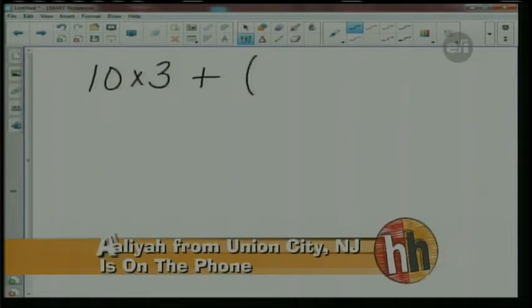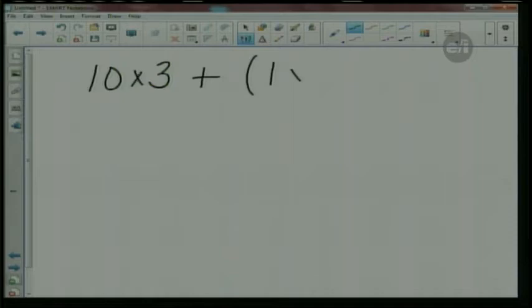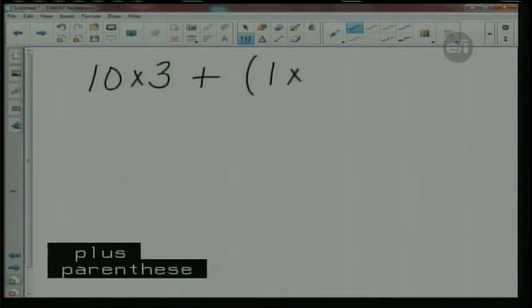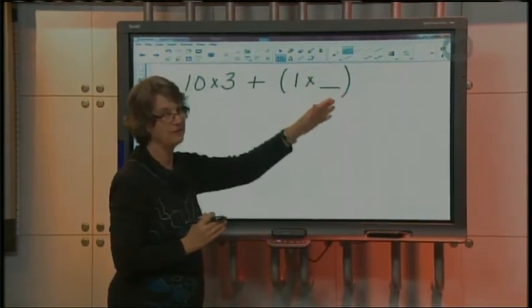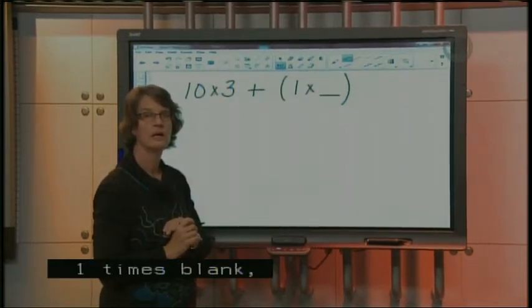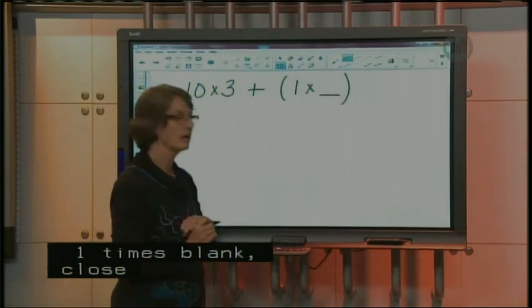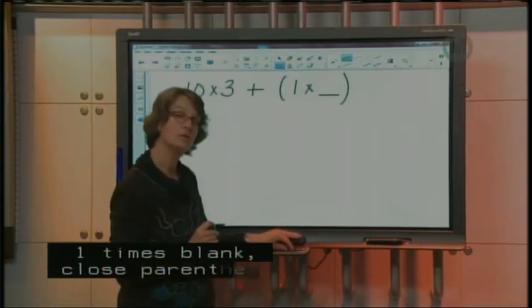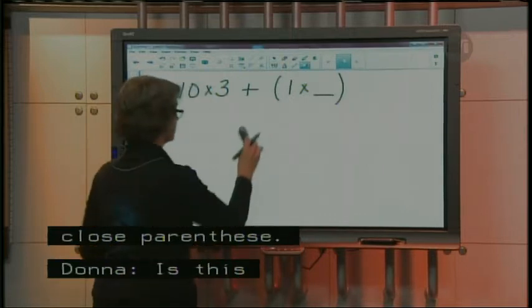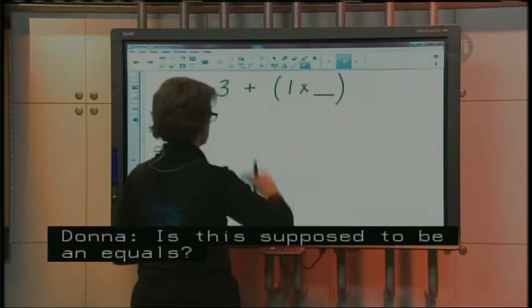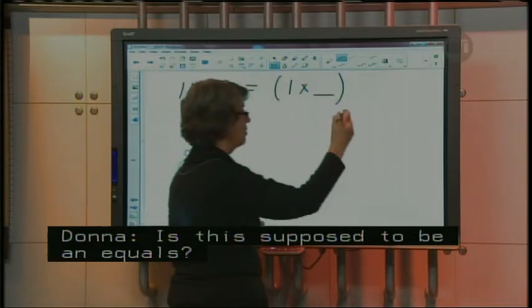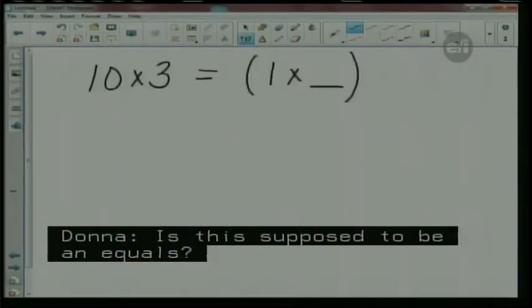And did you end your parenthesis? Yes. Alright. So you have a question that says, ten times three plus parenthesis one times blank. And what do we have to find for the blank, honey? I think we might have to separate the three or something. Okay. Is this supposed to be an equals instead of a plus? Yes, yes. No, no, no. It was a plus, but ten times three equals in a parenthesis. Ten times three equals? And then parenthesis. And then one times blank.